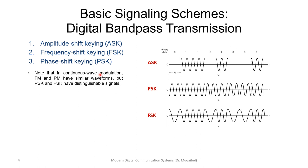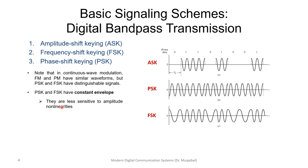In continuous wave modulation, it's not easy to distinguish PSK from FSK because they are related as derivatives. However, in digital systems we have discontinuity in phase, so PSK and FSK are usually distinguishable due to discrete phase changes. PSK and FSK have constant envelope — their amplitude is constant, power does not depend on the data, and they are less sensitive to nonlinearities and preferred over ASK for nonlinear channels.